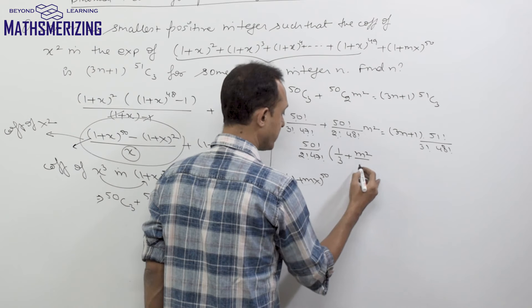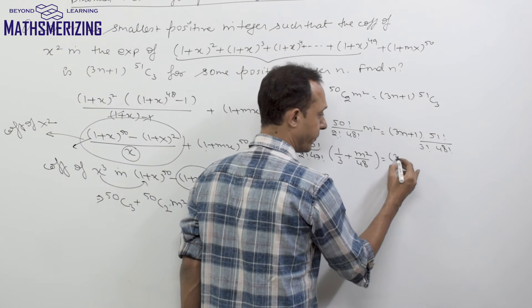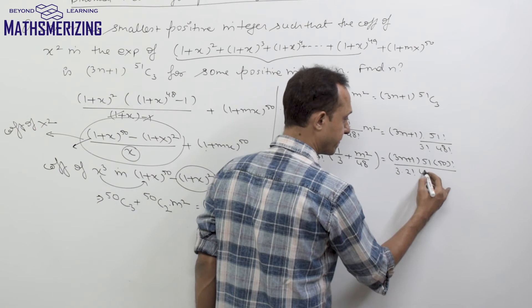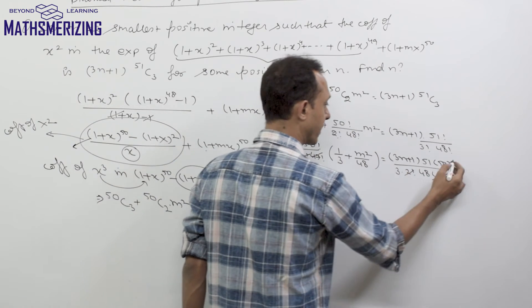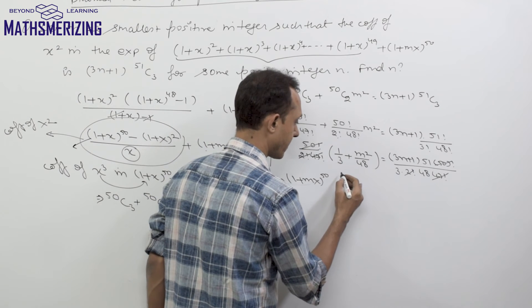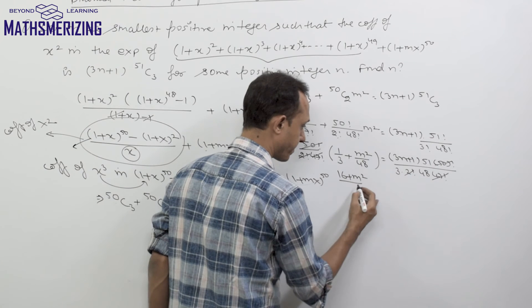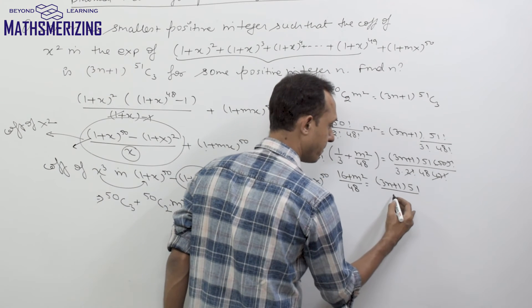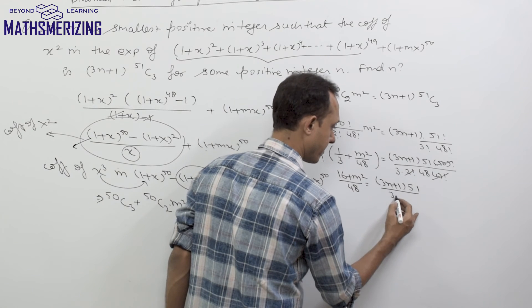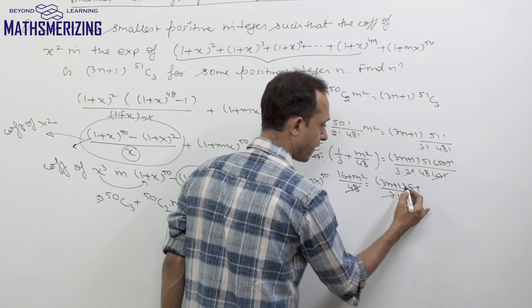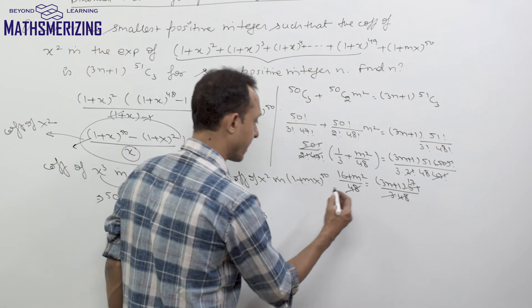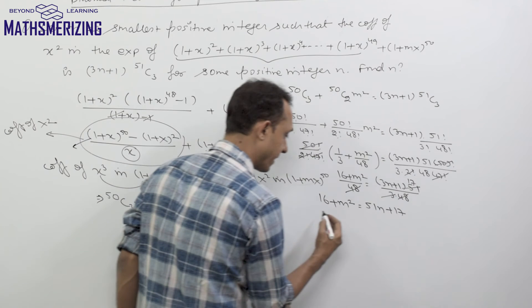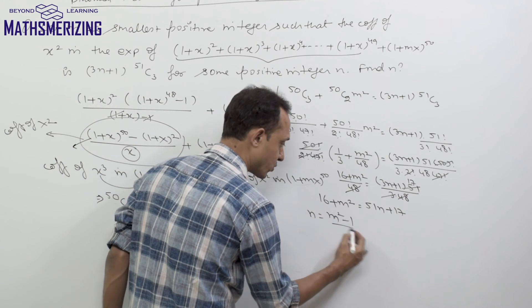After factoring, I get 1/3 + m²/48 on the left side, and (3n+1)·51/(3·48) on the right side. The 50! terms cancel. Taking LCM, I write (16 + m²)/48 = (3n+1)·51/(3·48). After cancellation, this simplifies to 16 + m² = 51n + 17, giving m² - 1 = 51n.